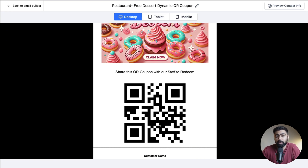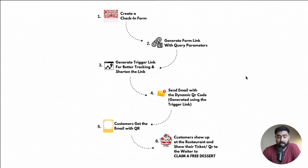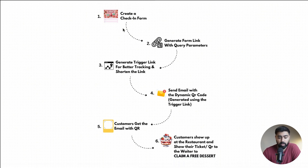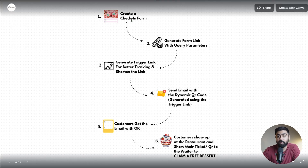Once the staff scans it, they should be able to see if this person is eligible or if they've already redeemed it. If it's good, they scan it, the offer is redeemed, and we get more visits using this campaign. Let's talk about the structure first and then dive into the setup. I have a visual representation for a step-by-step process.